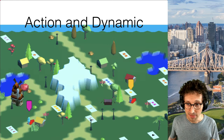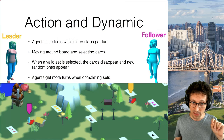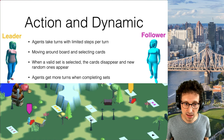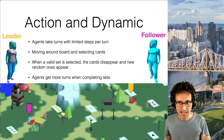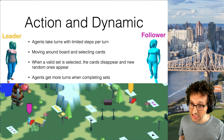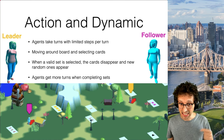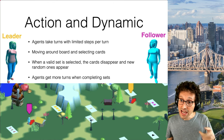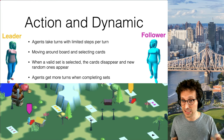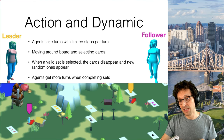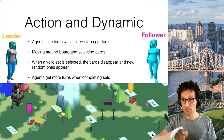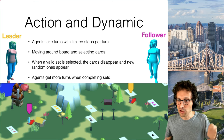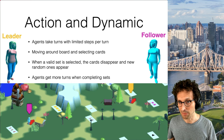The two agents move around the environment and take turns. In each turn, they have a limited number of steps. They move around the board, select cards, and when a valid set is selected, the cards disappear and new ones randomly appear. The agents get more turns when completing a set. So the better you do, the more turns you get and the higher you can score — a kind of 'richer gets rich' scheme.